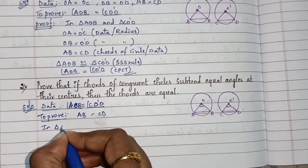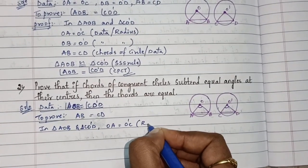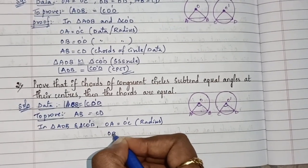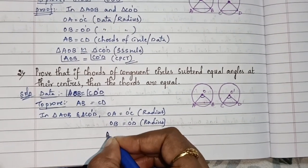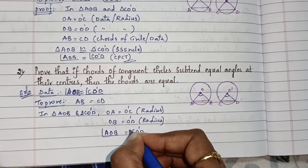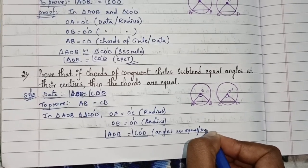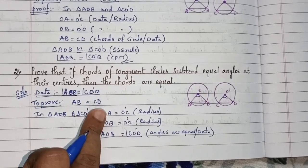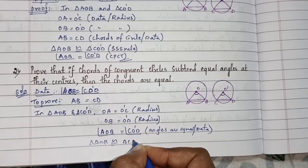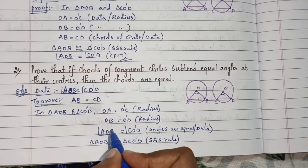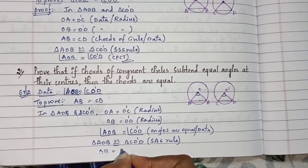In triangle AOB and triangle CO'D: OA equals O'C (radius), OB equals O'D (radius), and angle AOB equals angle CO'D (given). We have two sides and the included angle, so triangle AOB is congruent to triangle CO'D by the SAS rule. Therefore AB equals CD by CPCT.